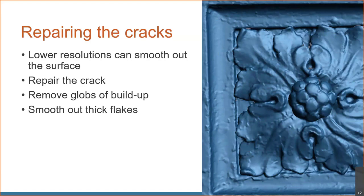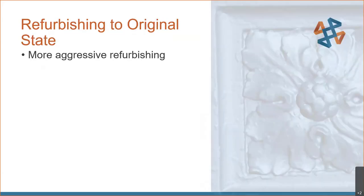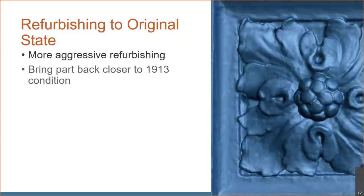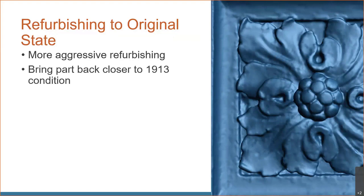Even after basic cleanup, we can do more aggressive refurbishing — more aggressive smoothing, de-featuring, deleting out features you don't want, maybe adding definition to better areas. For example, on the berries in the center, we want to deepen those grooves a little because they've been filled in by repainting, replastering, and whitewashing over time. All of this is done in VX Model software, getting it back to a very close representation of the 1913 condition.